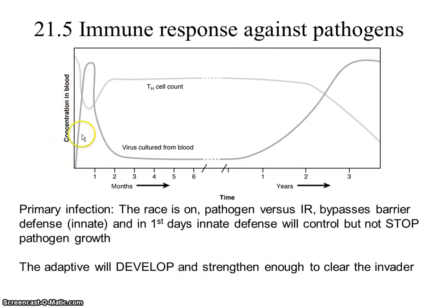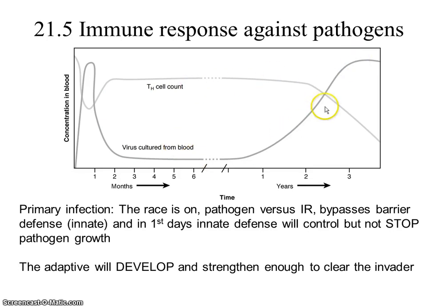We look at the concentration in blood of the virus itself and the concentration of T cells - inversely related. As the virus goes up, T cells might initially decline but will stabilize and be very high, which keeps the virus low. If your T cell counts decline, the virus will increase again. This is why you have to have a specific immune response, because innate defenses and barriers are not very effective at the end of the day.